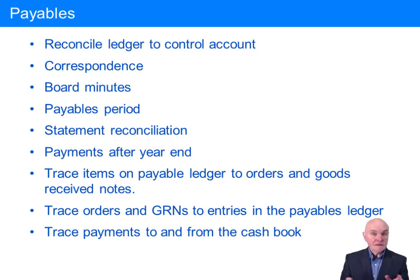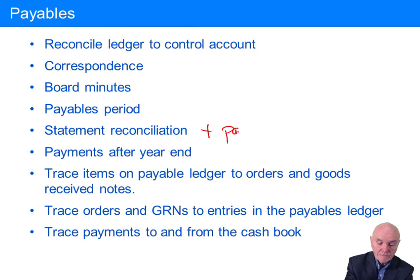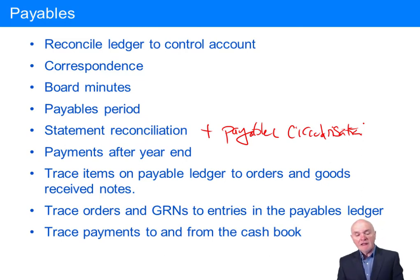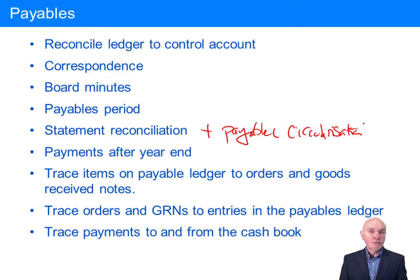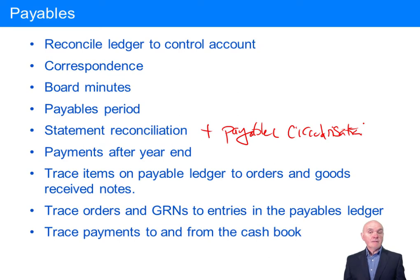You can also do a payables circularization, done very much the same way as a receivables circularization. This is where the auditor asks the client to write to suppliers — to people to whom they owe money — and to confirm the amount owing at a particular date. The supplier will then write back directly to the auditor confirming that amount.